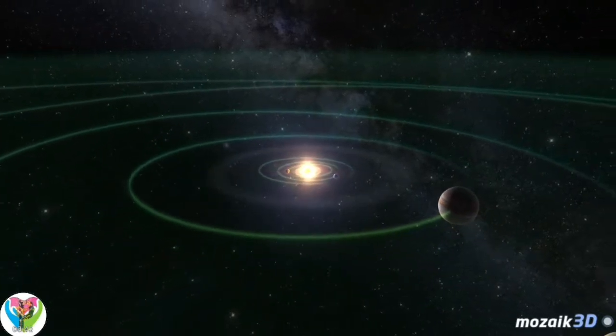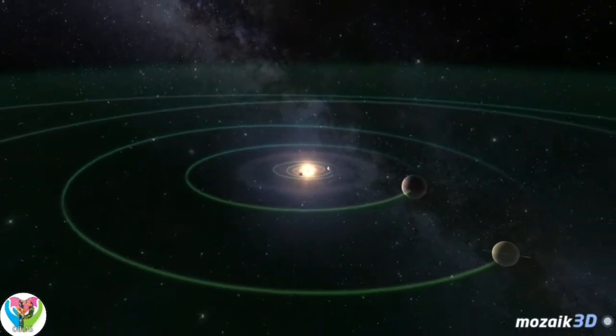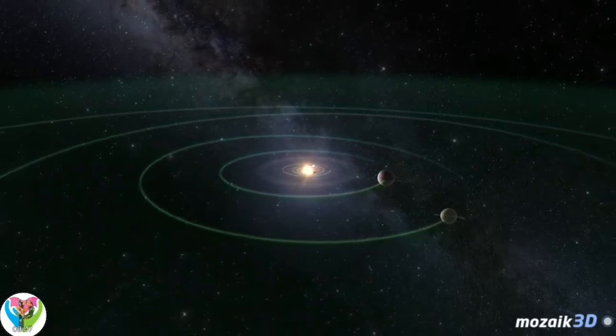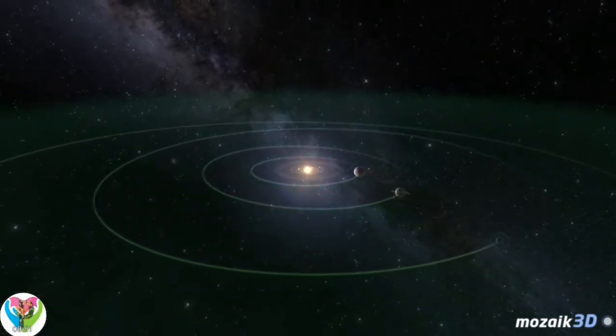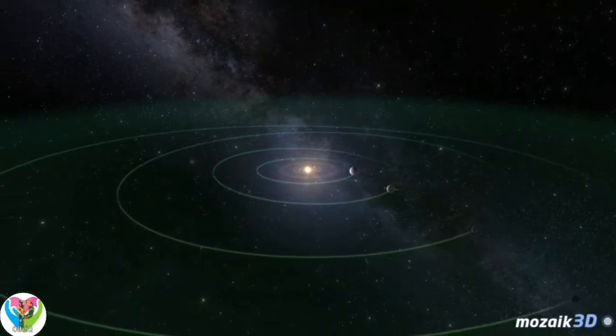The nearest stars, Proxima Centauri and the double system of Alpha Centauri, are 4.2 to 4.4 light-years away from us, and there are only 11 stars within 10 light-years.